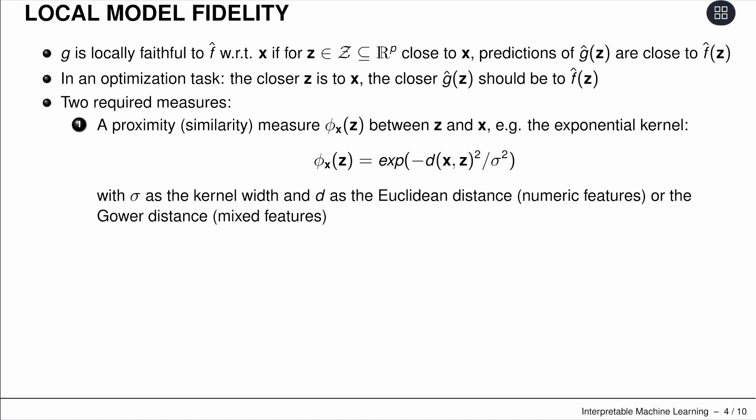There are two required measures. First, a proximity, similarity, or neighborhood measure—that's our phi function. Phi is always for a fixed input vector x, and we define it with respect to z. For example, if we have continuous feature space, we can use an exponential kernel—the distance between x and z